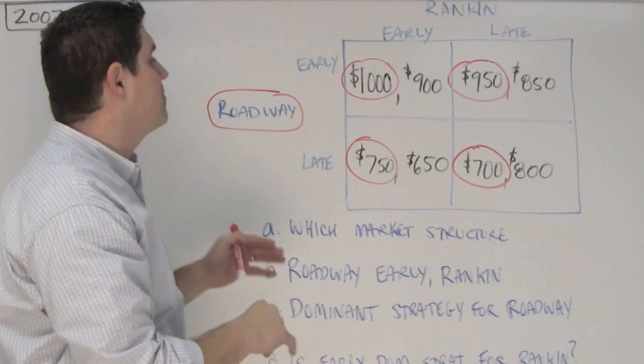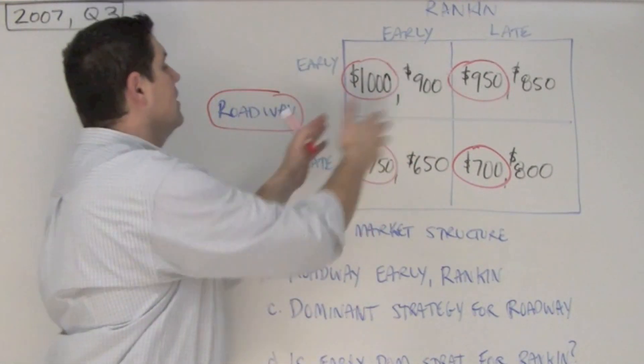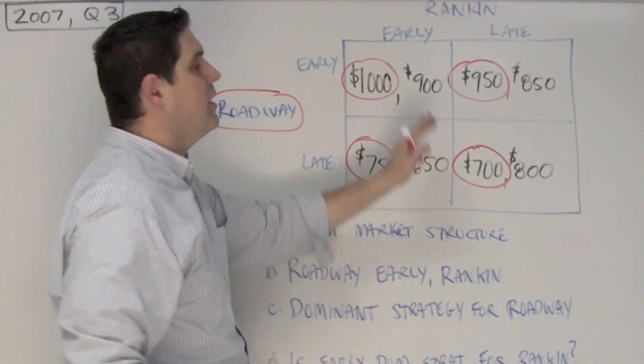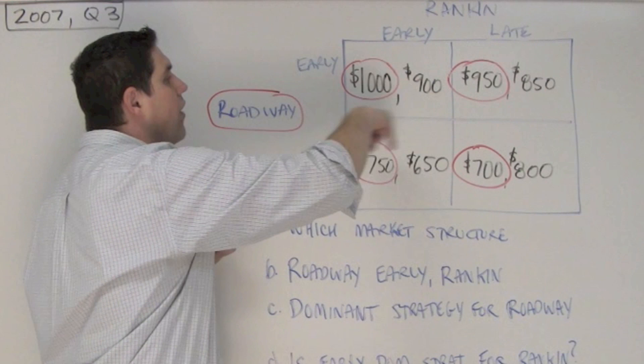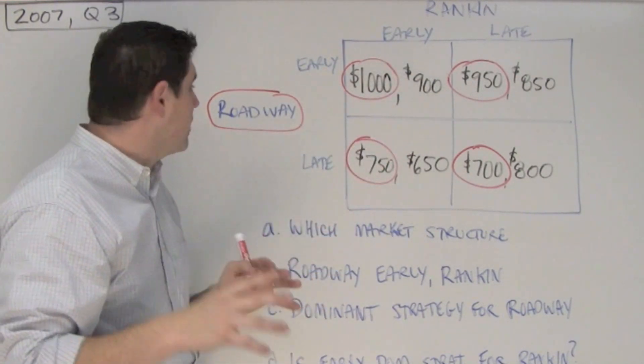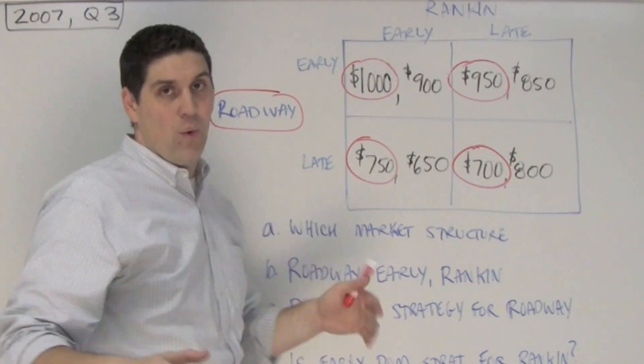The numbers in the middle is the profit these firms could get depending on what the other firm does. Now the numbers on the left are Roadway. The numbers on the right are Rankin. So what I do is I circle the firm on the left and circle all the numbers on the left to remind me that if I'm looking for numbers for Roadway, it's the circled ones. If I'm looking for numbers for Rankin, it's the ones that are not circled.